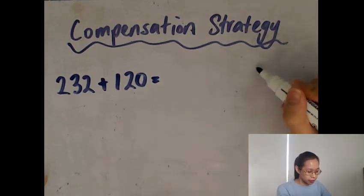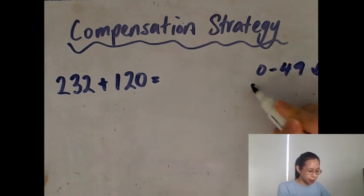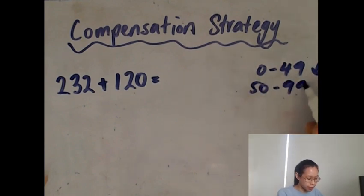So in your numbers, if you have the last two numbers between 0 to 49, then you round down. If you have numbers between 50 to 99, then you round up in the hundreds.